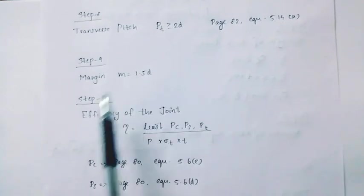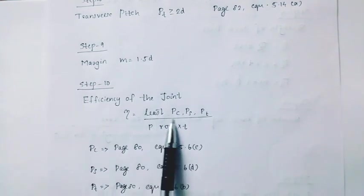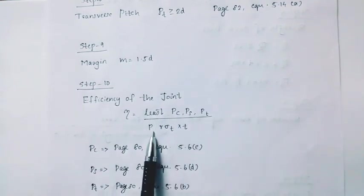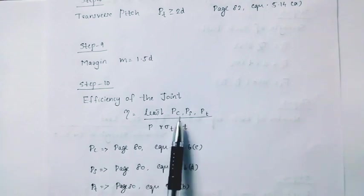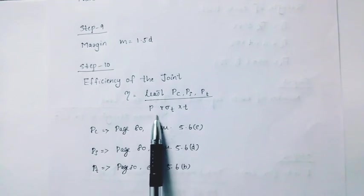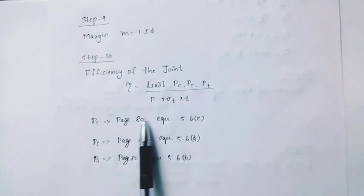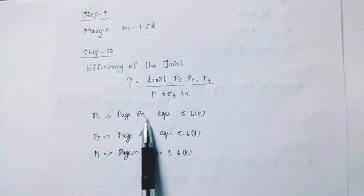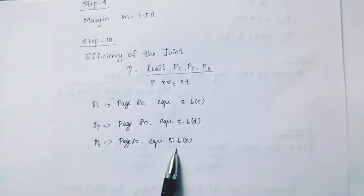Last step, step 10. Efficiency of the joint. Efficiency eta equal to least of pc, ps, pt divided by p into sigma t into t. Pc page number 80 equation 5.6a, ps page number 80 equation 5.6d, pt page number 82 equation 5.6b.